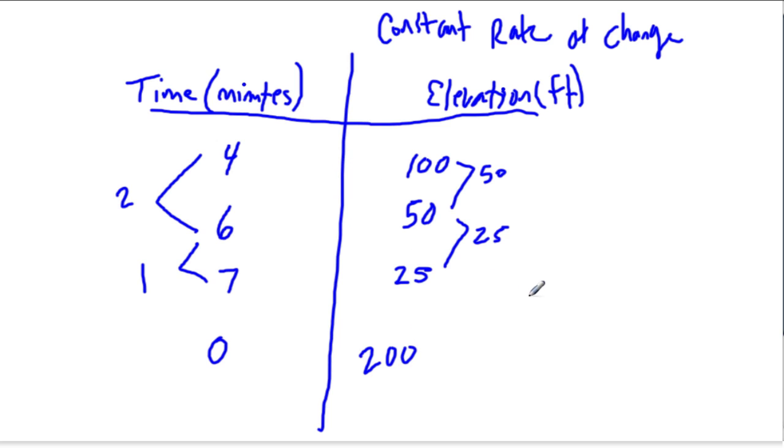So now, let's find an equation. y equals something, some rate of change times x plus b. And x is independent. That's the time. Remember, like I said, time is almost always independent. And then elevation depends on how much time has passed.